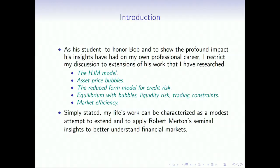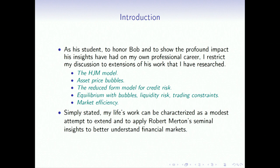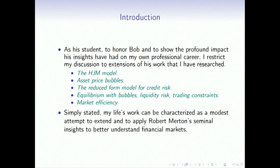So how can I do this in 20 minutes? As his student, and to honor Bob, and to show the profound impact his insights have had on my own professional career, I'm going to restrict my discussion to my own research: the HGM model, asset price bubbles, the reduced form model for credit risk compared to Merton's contingent claims analysis, and equilibrium with bubbles, liquidity risk, and trading constraints. Simply stated, my life's work can be characterized as a modest attempt to extend and apply Robert Merton's seminal insights to better understand financial markets. I am truly a Mertonian.